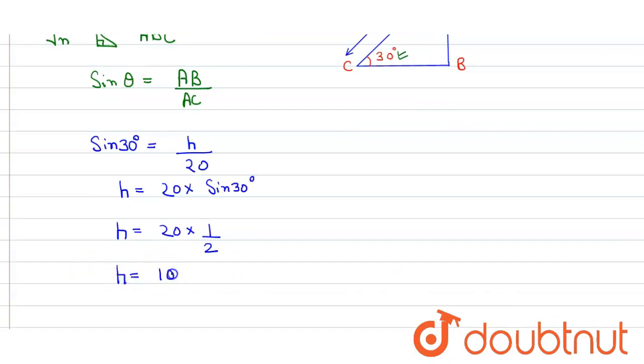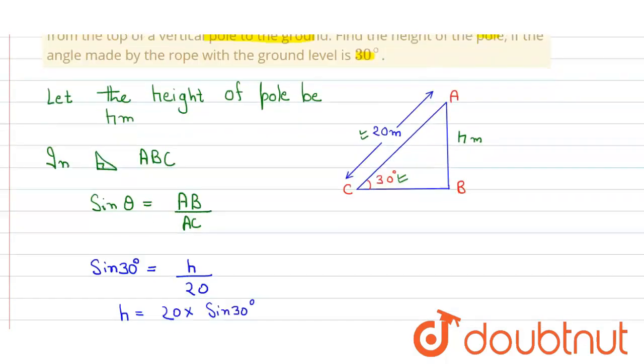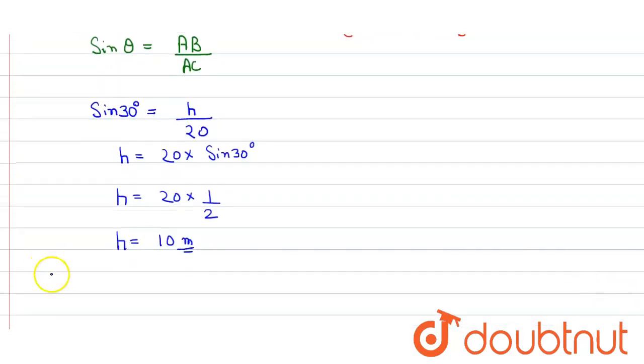So the height of the pole is 10 meters. Thus, the height of the pole is equal to 10 meters, and that's our answer.